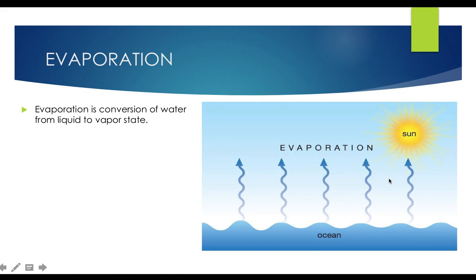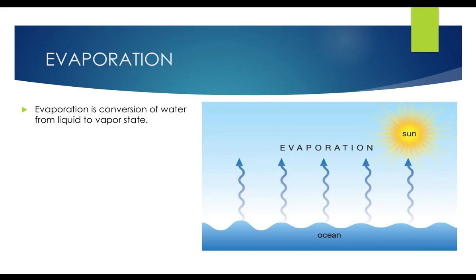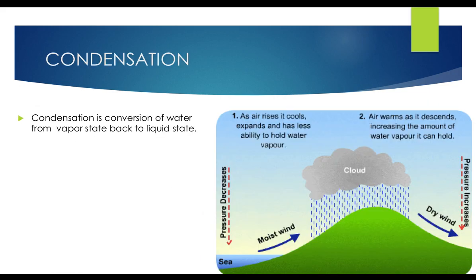Evaporation — we have seen it is a process in which water from the ocean is converted into water vapor and moves in the upward direction. When water vapor gets heated up, it moves upward. Evaporation is the conversion of water from liquid to vapor state.